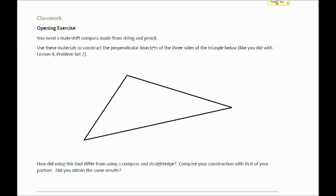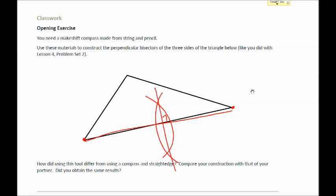The opening exercise asks you to construct the perpendicular bisectors of the three sides of the triangle. To review very quickly how to construct the perpendicular bisector: for this segment, you'd put the pointy end on this endpoint, have your compass go more than half, and draw an arc. I'm just sketching it here. Then put the pointy end on the other endpoint without changing the compass size, make the same arc, connect the two dots, and you have a perpendicular bisector.